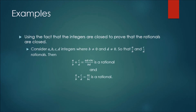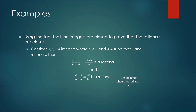We can use the fact that the integers are closed to prove that the rationals are also closed. Consider two rational numbers a/b and c/d, where a, b, c, and d are all integers and b and d are not equal to zero. If we add a/b plus c/d, we get (ad + bc) / bd. Since ad and bc are integers, their sum is an integer, and bd is a non-zero integer. Thus the rationals are closed under addition.